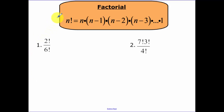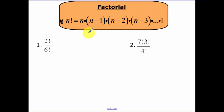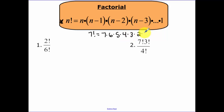A factorial is a new operation. N factorial is n times n-minus-1 times n-minus-2, all the way down to 1. So seven factorial equals 7 times 6 times 5 times 4 times 3 times 2 times 1.